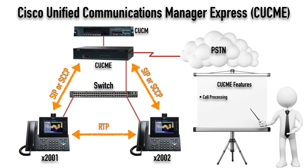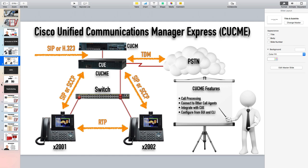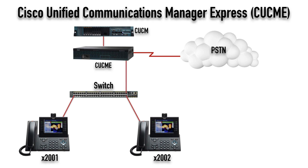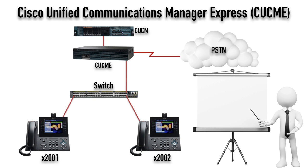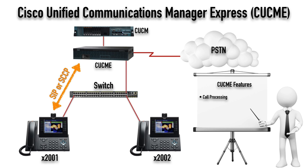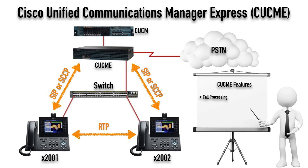Once the call is set up using call control protocols like SIP or SKINNY, RTP is going to carry the voice media. The voice packets themselves will be carried via RTP - the Real-Time Transport Protocol - and that uses UDP. Cisco uses UDP ports in the range of 16384 through 32767. The big takeaway is: SIP or SKINNY sets up the call, then RTP carries the actual voice back and forth between the phones.